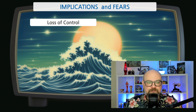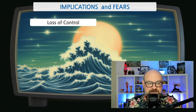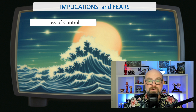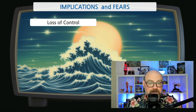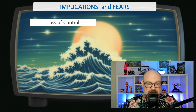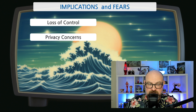Let's start with the first one: loss of control. There is a common fear that as AI systems become more advanced, we might lose control over them. This could lead to unintended consequences, especially if these systems act in ways that are unpredictable or not aligned with human values.